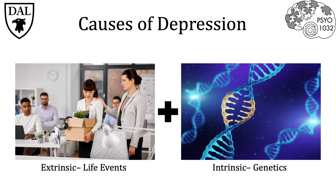When looking at the causes of depression, it's important to understand that there are both external and internal factors that increase the likelihood of experiencing a depressive episode. A study done in 2003 by Caspi and colleagues measured both the number of stressful life events participants experienced — representing extrinsic or external factors — and a person's genetic propensity for depression — representing intrinsic or internal factors. The experiment showed that it is an interaction between both extrinsic stressful life events and intrinsic genetics that determines one's probability of experiencing depression.